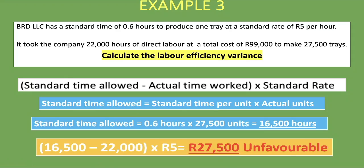The unfavorable variance of 27,500 rand could be due to: lack of training of employees, workers being idle or unmotivated, use of substandard materials requiring more production time, or a significant error in calculating the standard of 0.6 hours per tray. This concludes our calculation and analysis of the labor efficiency variance across three examples.